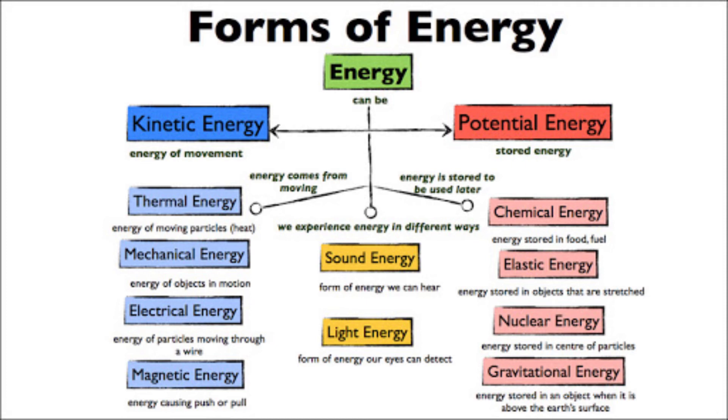There are eight primary forms of energy: kinetic, thermal, light, electrical, gravitational potential, elastic potential, chemical and nuclear. Keep in mind, energy cannot be destroyed nor created, it can only change forms.